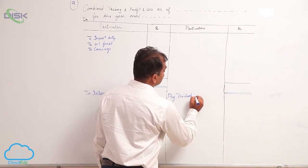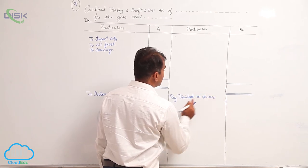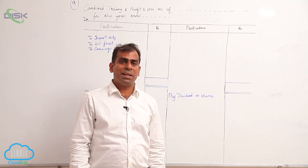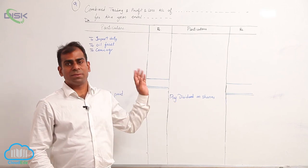Dividend on shares is an indirect income, so you will be taking dividend on shares on the credit side of your P&L account. So this way, try to complete the problem and be sure that you have taken all the amounts.